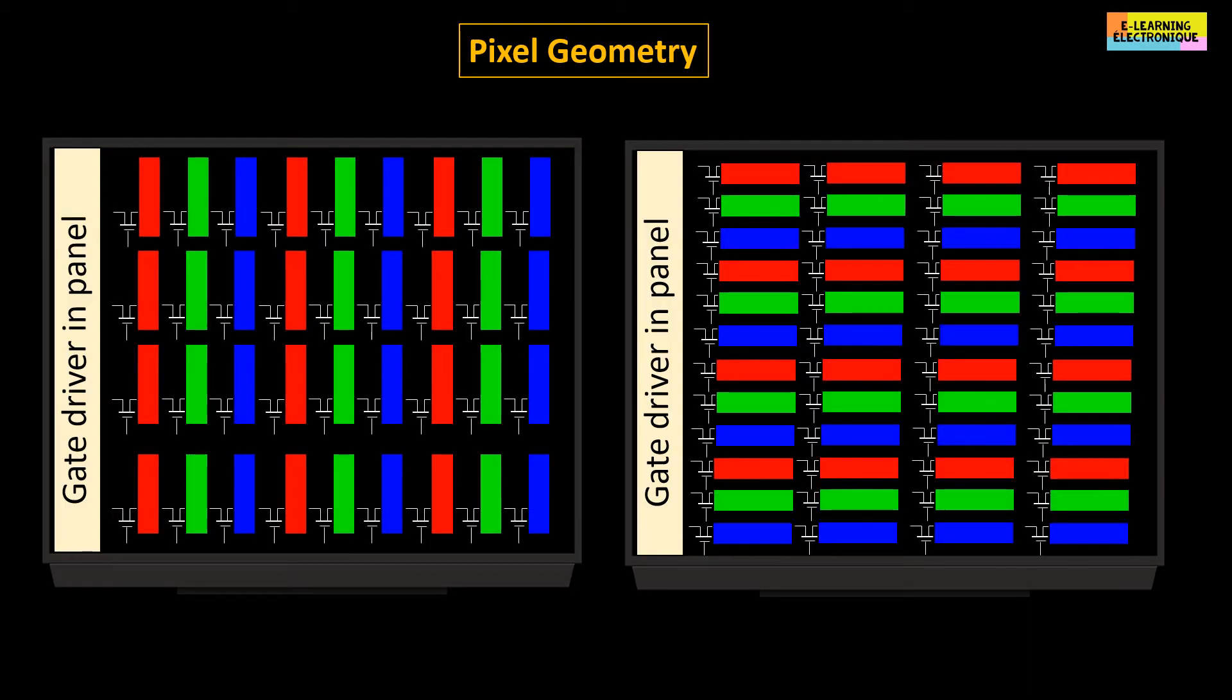Then we will see the different ways to control them through the gate driver. It should be noted that in LCD screens, all pixels are not always ordered in the same way. Classically, in a TFT LCD screen, each pixel is made up of three sub-pixels representing the three primary colors RGB or in the other direction BGR, which is the same.